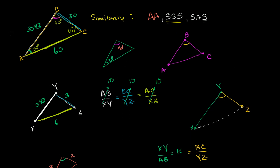You might wonder about AAS from congruence — but we've already shown that two angles alone are enough to show similarity, so there's no need for angle-angle-side. Similarly, angle-side-angle isn't needed for similarity since two angles already suffice. So our similarity postulates are: angle-angle (AA), side-side-side (SSS), and side-angle-side (SAS). Remember, SSS and SAS for similarity are different from SSS and SAS for congruence — here we're talking about the ratio between corresponding sides, not the actual measures.